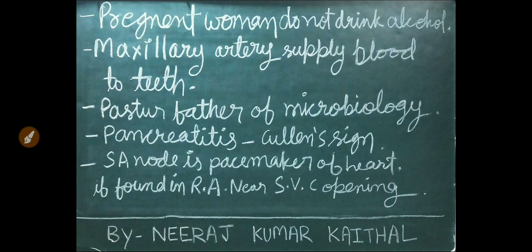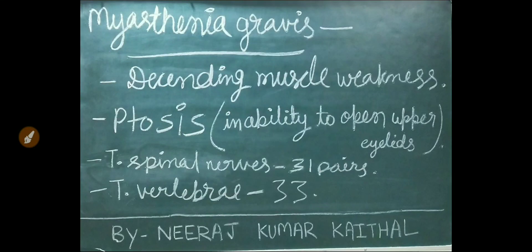Maxillary arteries supply blood to teeth. Pasteur is known as the father of microbiology. Cullen's sign is present in pancreatitis. Sinoatrial node is known as the pacemaker of the heart, situated in the right atrium near the opening of superior vena cava. In myasthenia gravis, descending muscle weakness is seen, and ptosis — inability to open upper eyelids — is also seen.